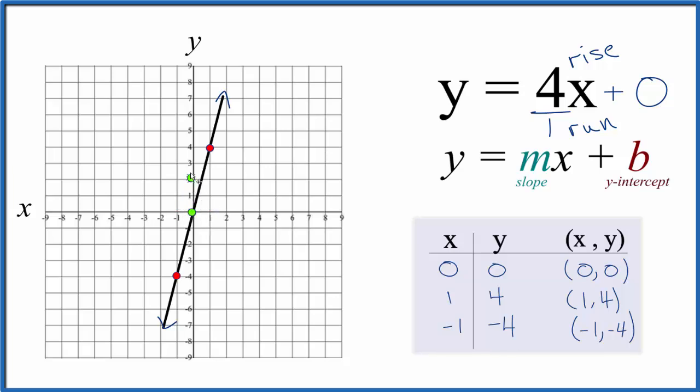Let's do it again, one two three four and over one. Likewise we can go in the opposite direction, we could go down four, one two three four and over one in the opposite direction. Let's do it again, one two three four and then over one.